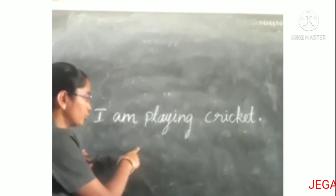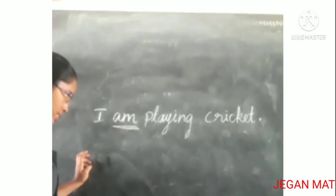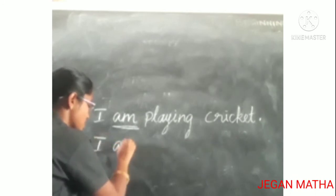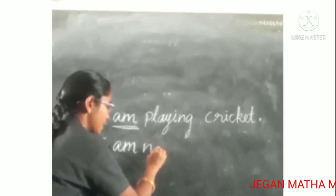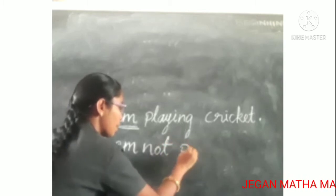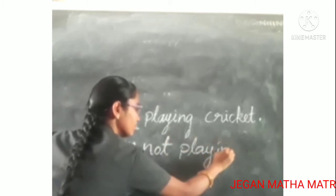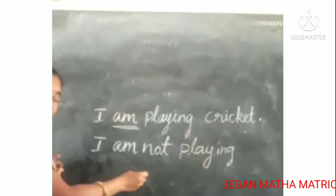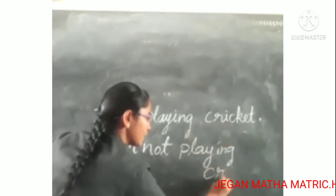Look at this sentence: 'I am playing cricket.' It uses a be-form verb in the present tense. So, like the last example, we add 'not' after the verb: 'I am not playing cricket.'